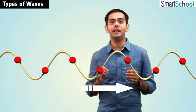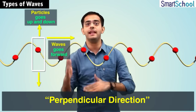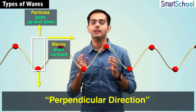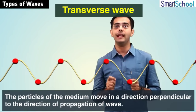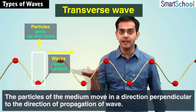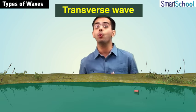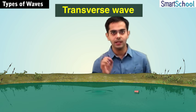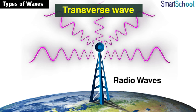The waves move straight from one end to the other, while the particle motion that makes the wave is in a direction perpendicular to the direction of propagation of the wave. This type of wave is called a transverse wave, in which the particles of the medium move in a direction perpendicular to the direction of wave propagation. Examples of transverse waves include water waves formed when a stone is dropped into a lake, light waves, and radio waves.